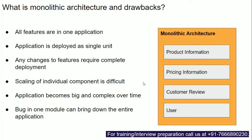Scaling of individual components is very, very difficult. The application becomes bigger and more complex as more features are added. A bug in one area of your application might impact other areas and can bring down your entire application. For example, a bug in pricing information can bring down the whole monolithic application, because it acts as a single unit.